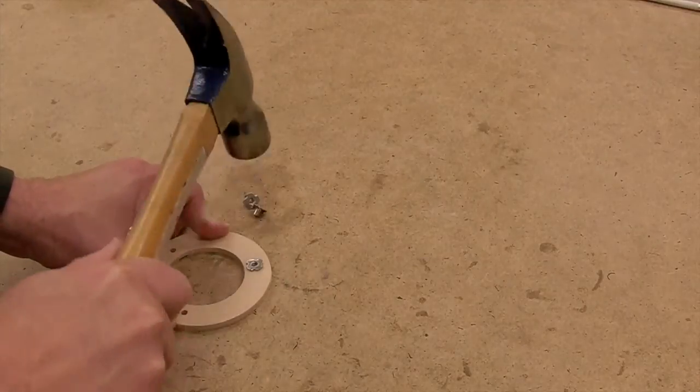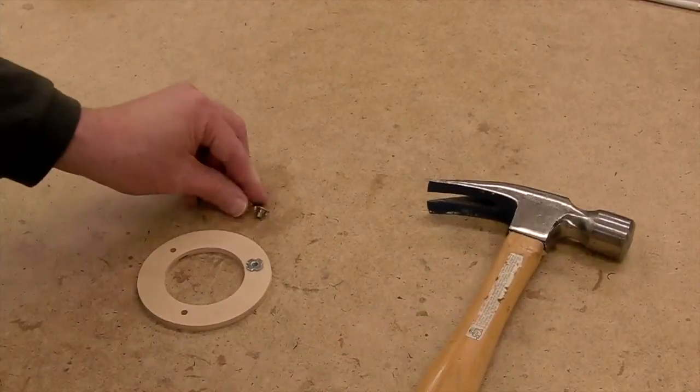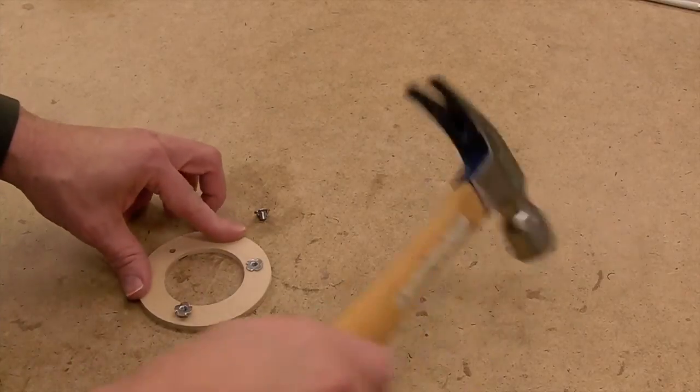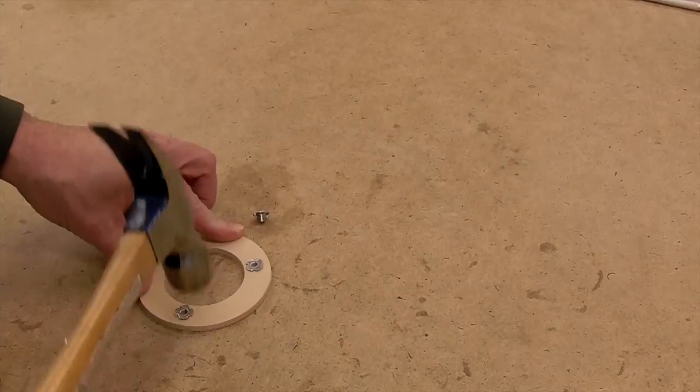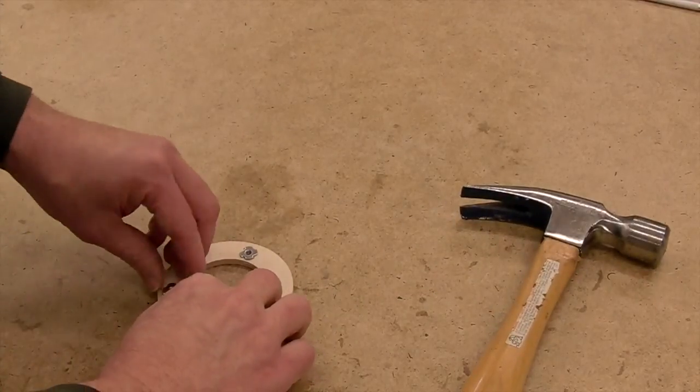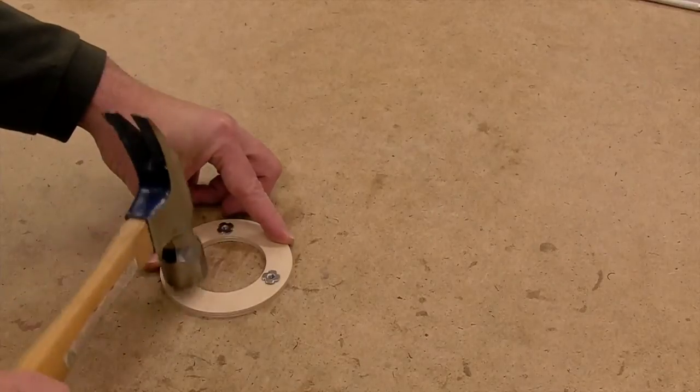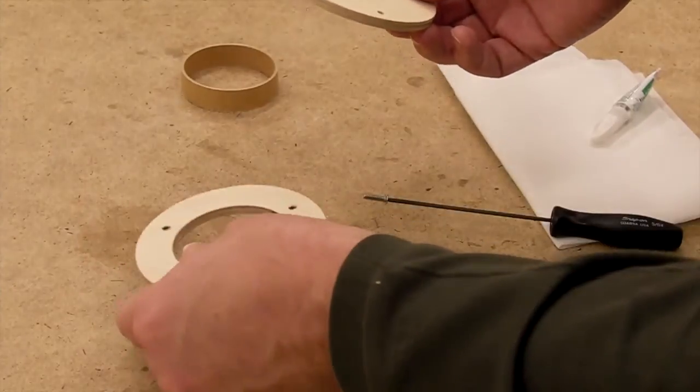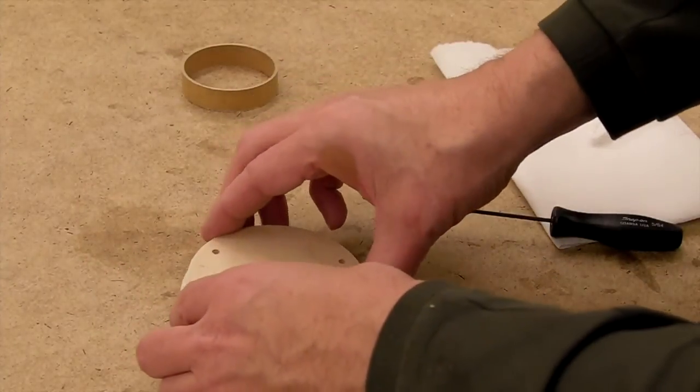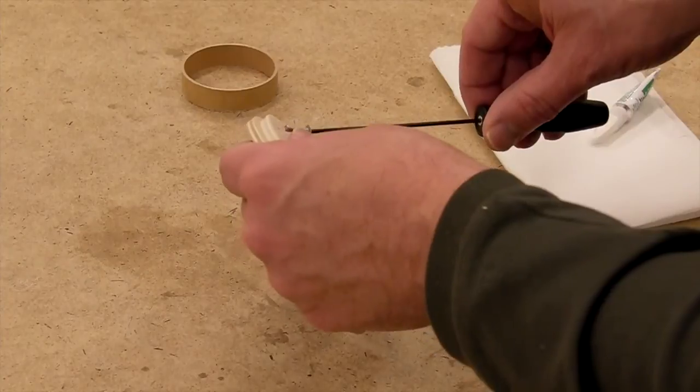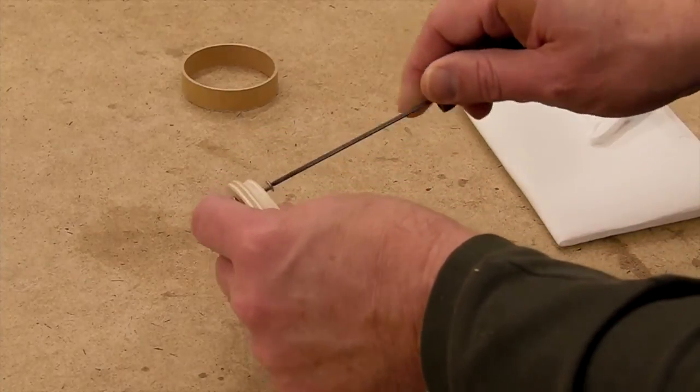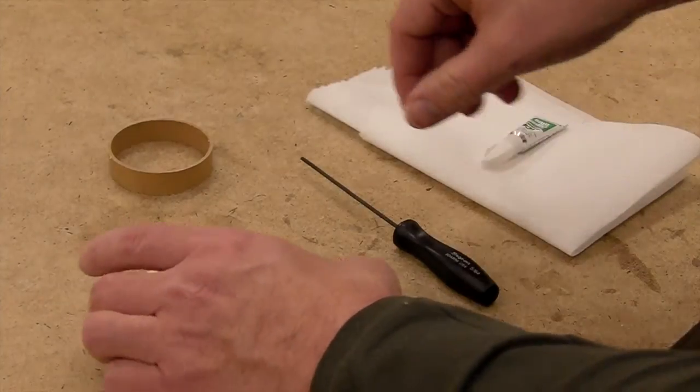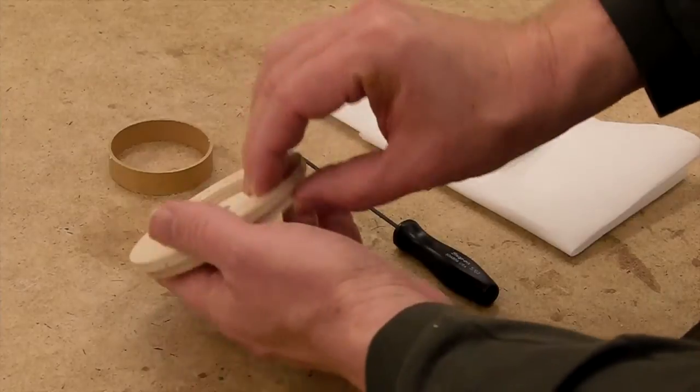So now that our T-nuts are installed, we can mount the plate as though it were being installed into the nose. With all three screws in place, the pieces are held in alignment.